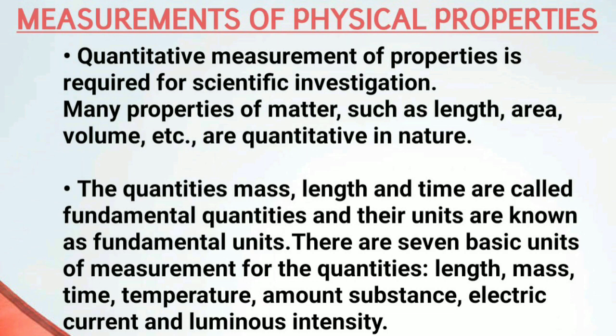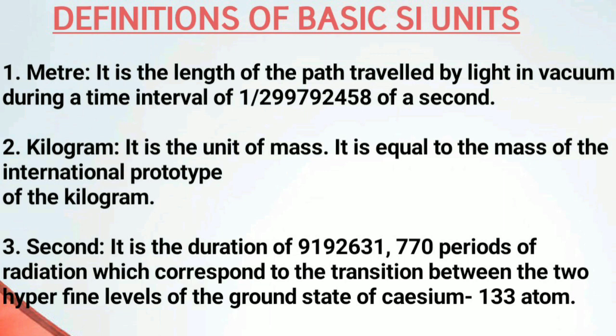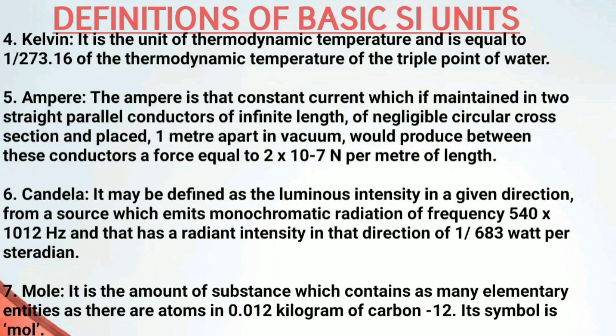There are basically seven fundamental quantities: length, mass, time, temperature, electric current, luminous intensity, and amount of substance. The units of these fundamental quantities acceptable throughout the world are called SI units. The SI unit of length is meter, mass is kilogram, time is second, thermodynamic temperature is Kelvin, electric current is ampere, luminous intensity is candela, and amount of substance is mole.